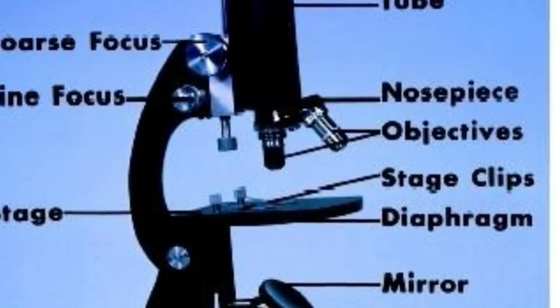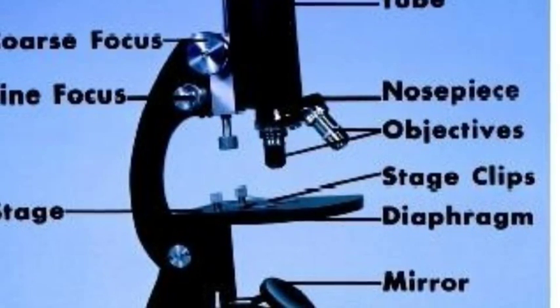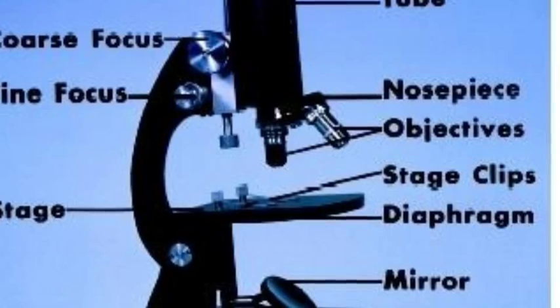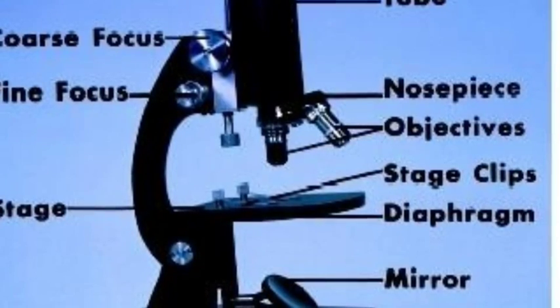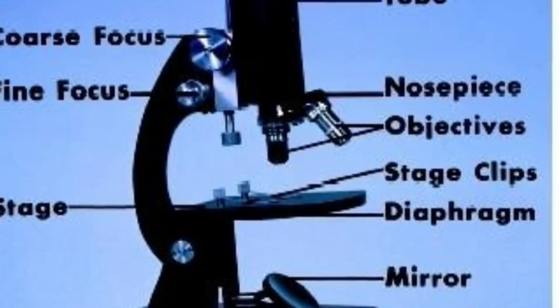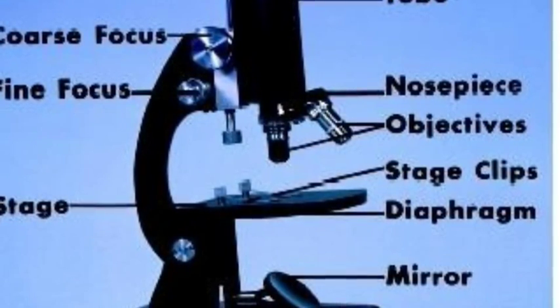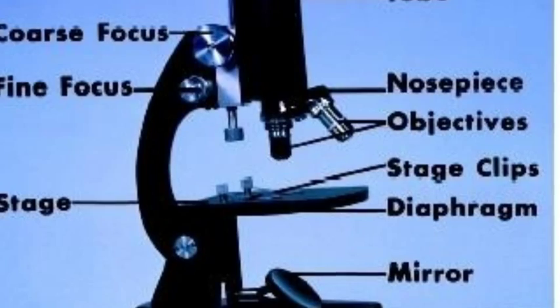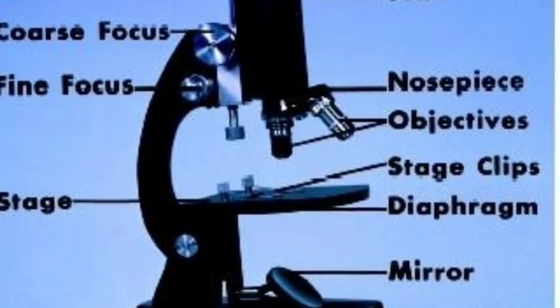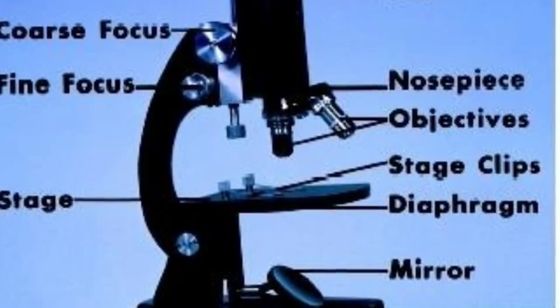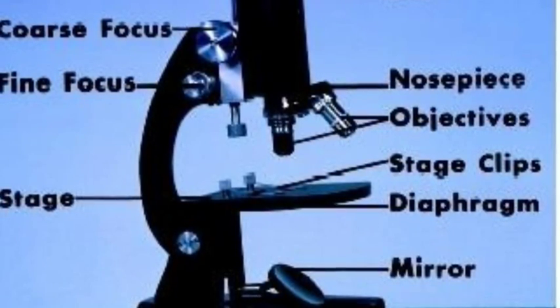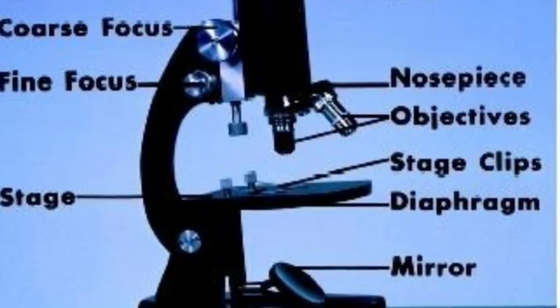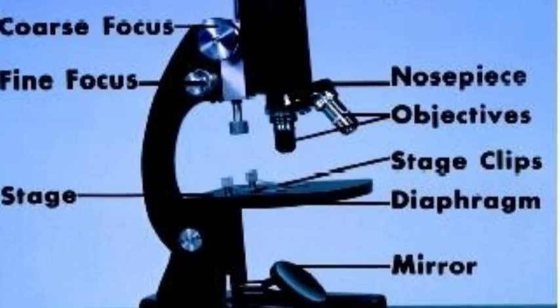Back in the day, there was a cataclysmic invention changing the world of science as we know it. It is the microscope. Invented in 1595, the microscope is used for magnifying the view of the human eye. Let's take a look at a more modern version of the microscope.